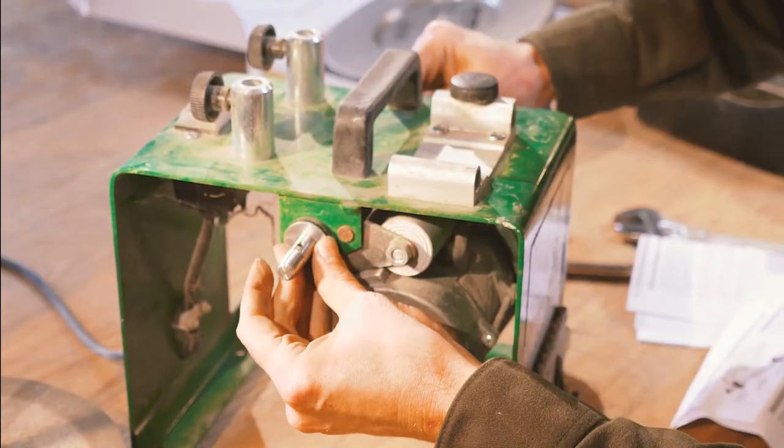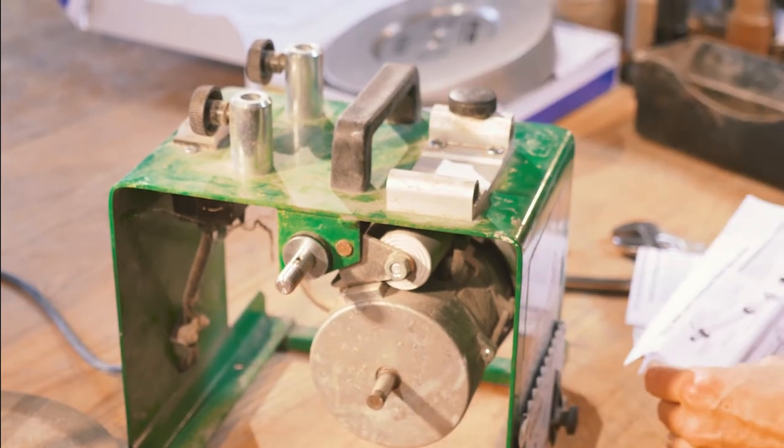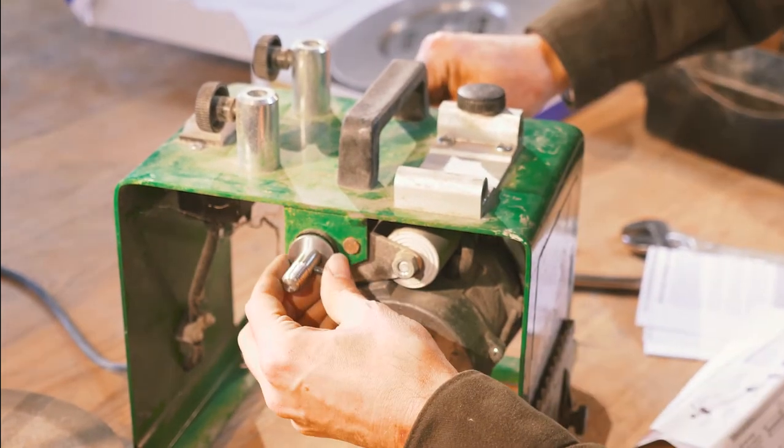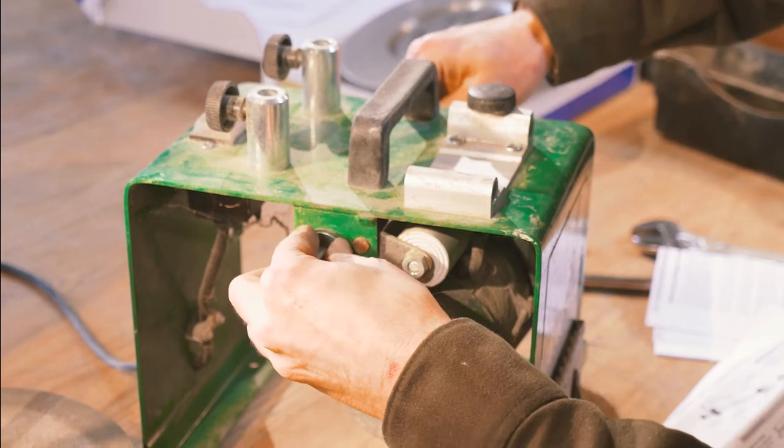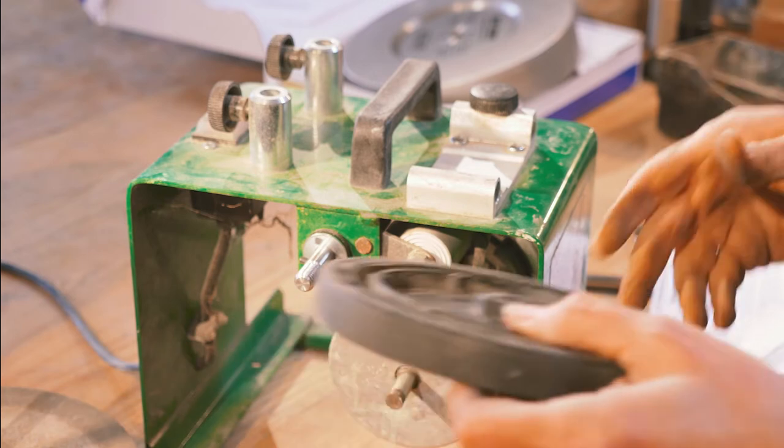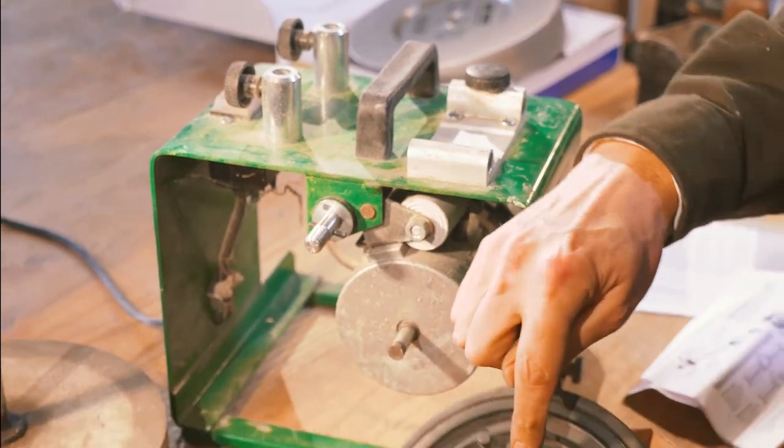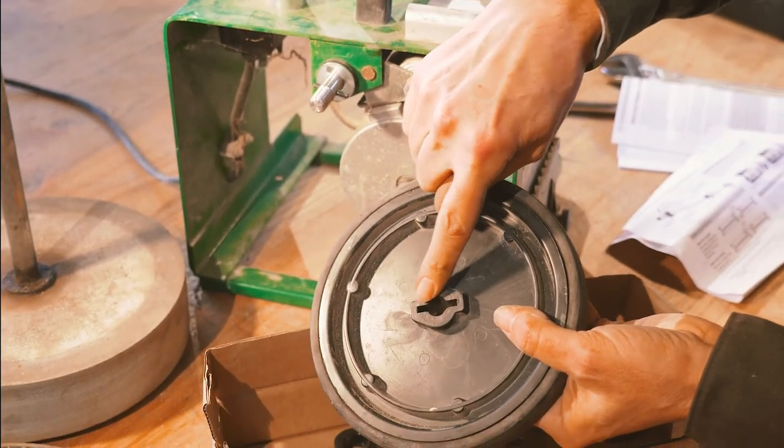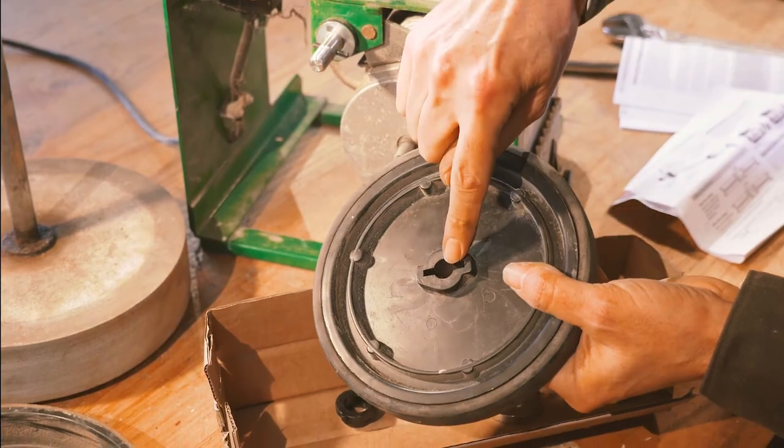Right, so there we have the washer in. So now we need the pin. Now we need the inner drive wheel, making sure that obviously we locate it this way round because that pin has to go into that slot. Remembering to move the motor.